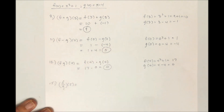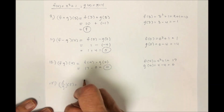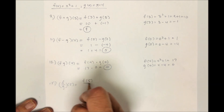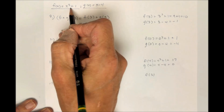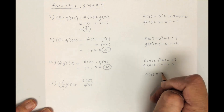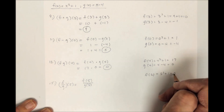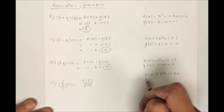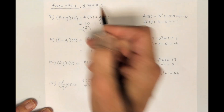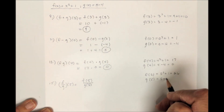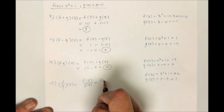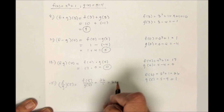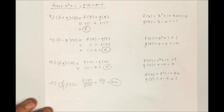F over g of 5 is f of 5 over g of 5. F of 5, using this rule, would be 5 squared plus 1, which is 26. G of 5, using this rule, would be 5 minus 4, which is 1. So I have 26 over 1, which is just 26. And that's how problems 9 through 15 work — those are pretty straightforward.